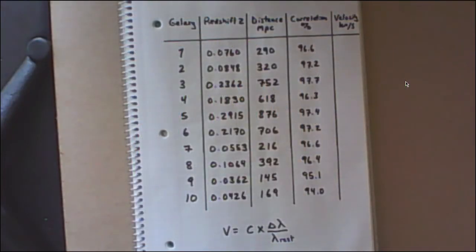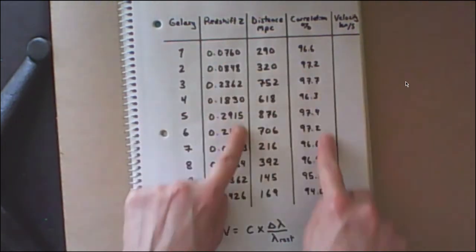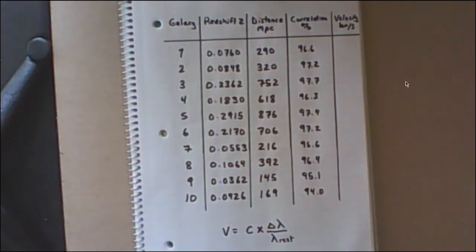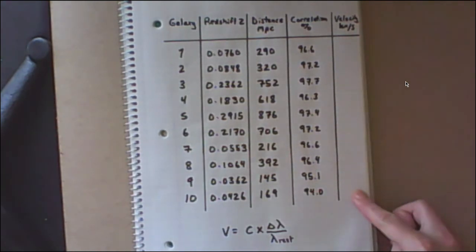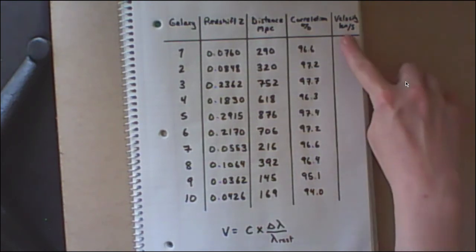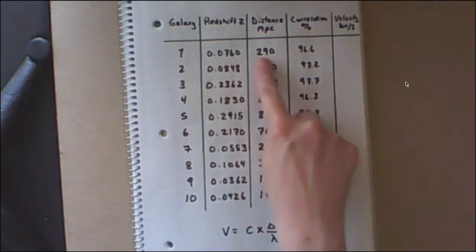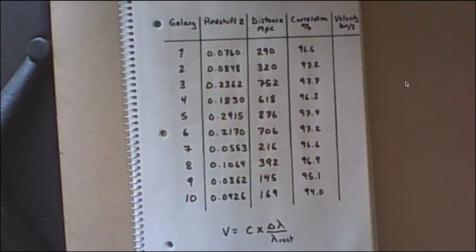Now after you've taken all your data, you'll have all your data recorded in your notebook. So these four columns are just the data that you got directly off the screen from the simulation. And you're going to have an extra column in your data table for calculating the velocity. So that's the velocity that that galaxy is moving away from us. So the universe is expanding. All the galaxies appear to be moving away from us.